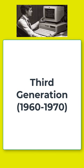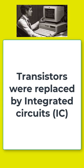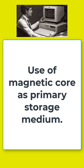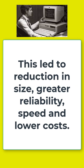The third generation computers had a time period of 1960 to 1970. In second generation, transistors were used, but in third generation, transistors ko replace kar diya gaya by integrated circuits. Apart from that, they use magnetic core as primary storage medium, which led to reduction in size, greater reliability, speed, and lower cost of the computers.